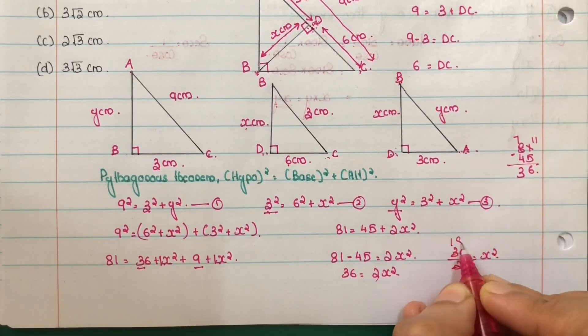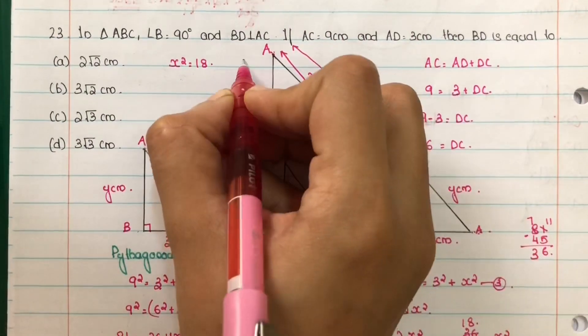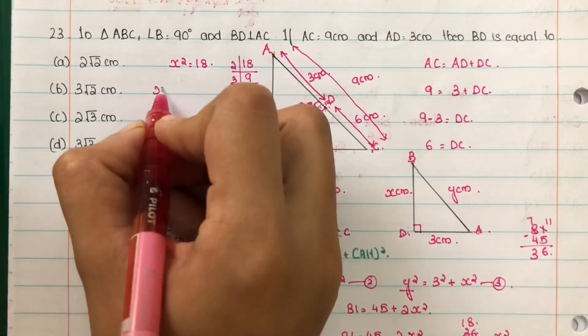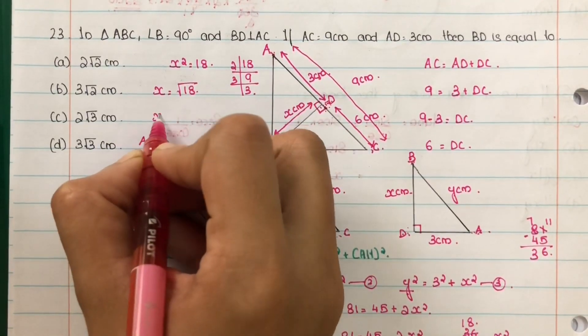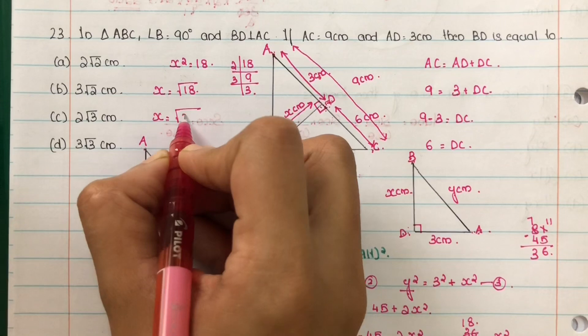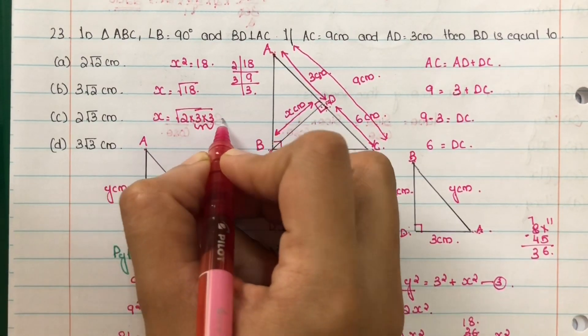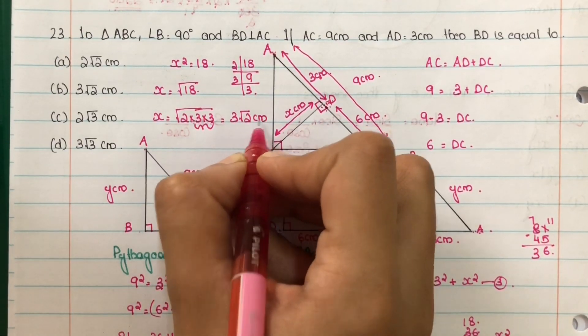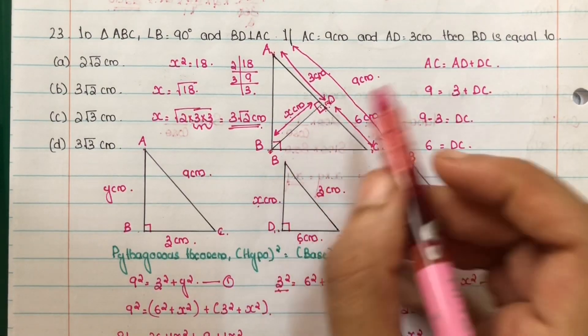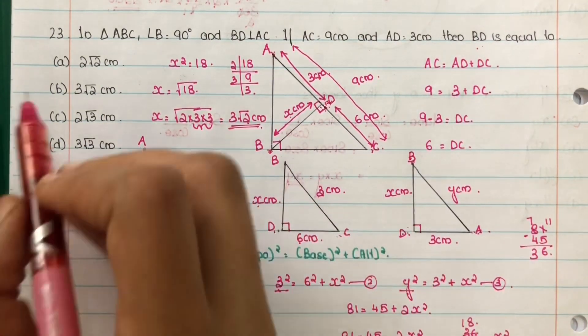x square is equal to root of 18. That is x equal to root of 2 into 3 into 3. That is equal to 3 root 2 centimeters. What is the value? BD. BD is equal to 3 root 2 centimeters. Option B.